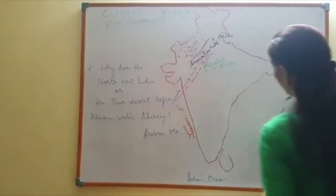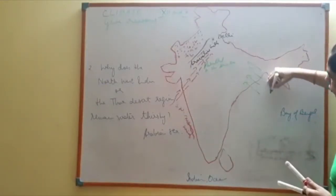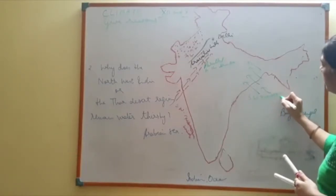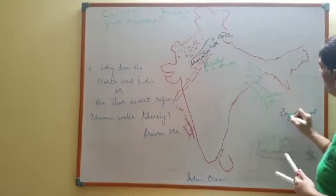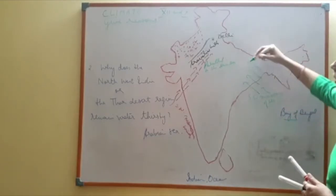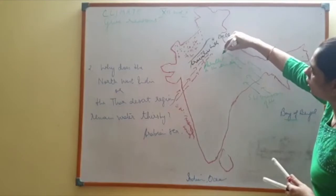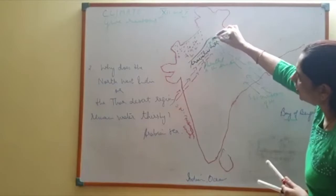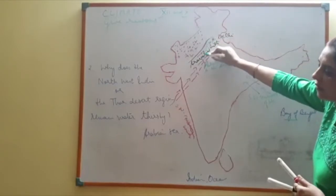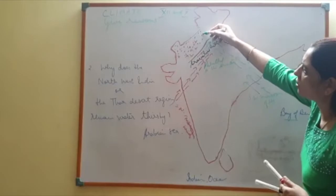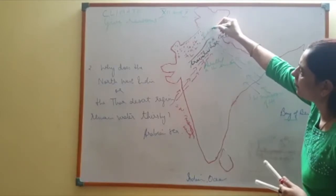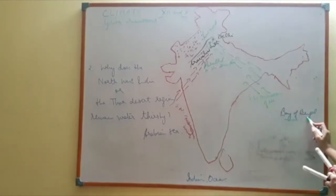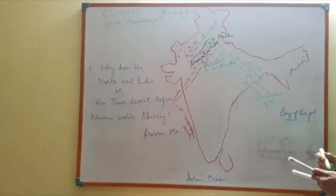The Bay of Bengal branch of the Southwest monsoon moves towards the Northwest and strikes the Aravallis, bringing rains on the windward side of the Aravallis. By the time it descends and reaches the leeward side, it is dry. So the Southwest monsoon winds of the Bay of Bengal branch also fail to bring rains in the Northwestern part.